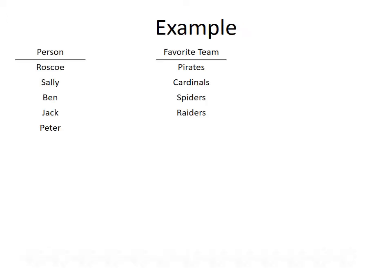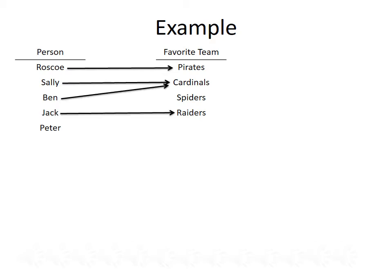Let's look at an example. We're given a list of people and their potential favorite sports teams. For the people, we have Roscoe, Sally, Ben, Jack, and Peter. And the potential teams are the Pirates, the Cardinals, the Spiders, and the Raiders. Roscoe's favorite team is the Pirates. Sally likes the Cardinals. Ben also likes the Cardinals. Jack likes the Raiders. Peter's favorite team is the Spiders.